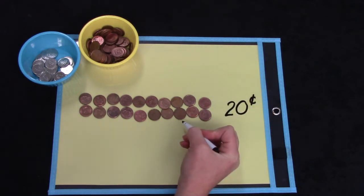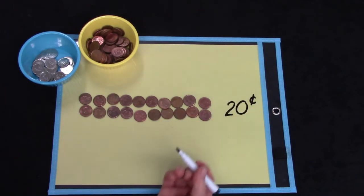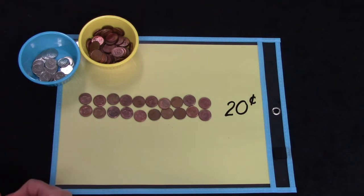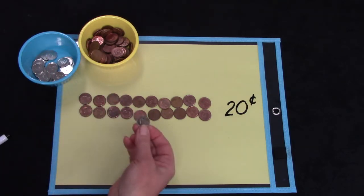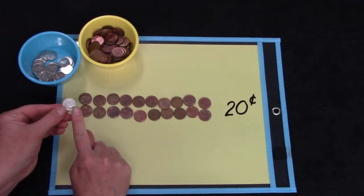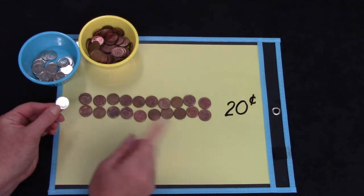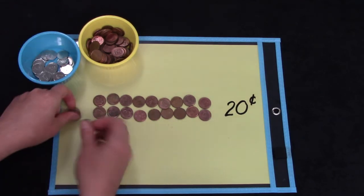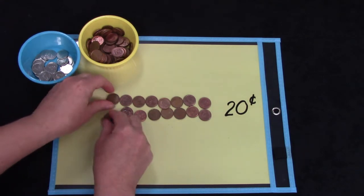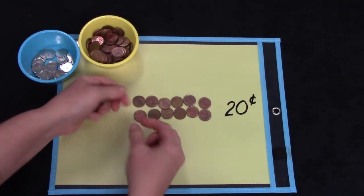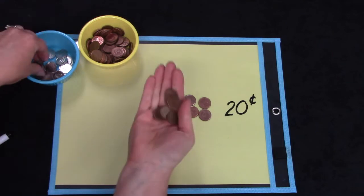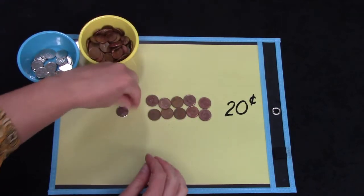Now 20 pennies is the same as how many dimes. Do you remember how many pennies we need to trade for one dime? It's 10. 2, 4, 6, 8, 10. I'm going to trade these pennies for a dime.